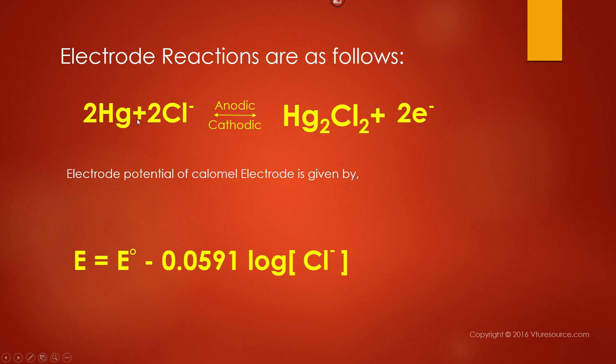2Hg plus 2Cl⁻ gives Hg₂Cl₂ plus 2 electrons. Here, mercury undergoes oxidation to liberate 2 electrons.